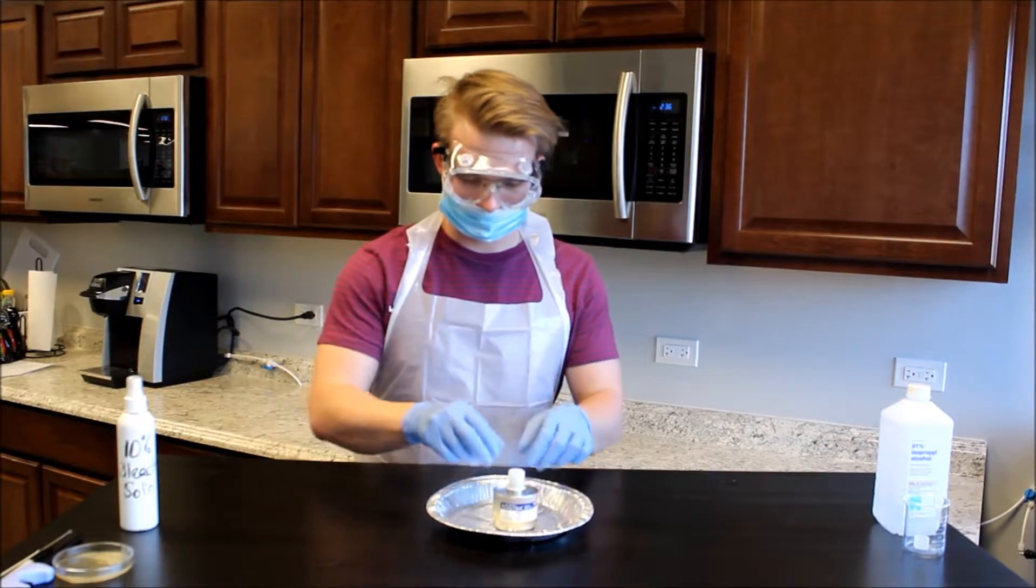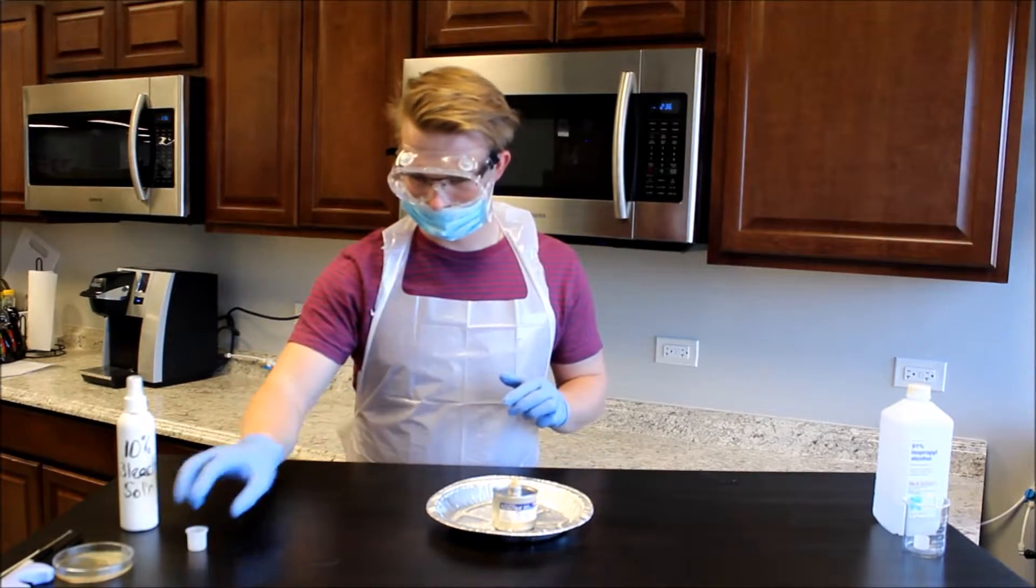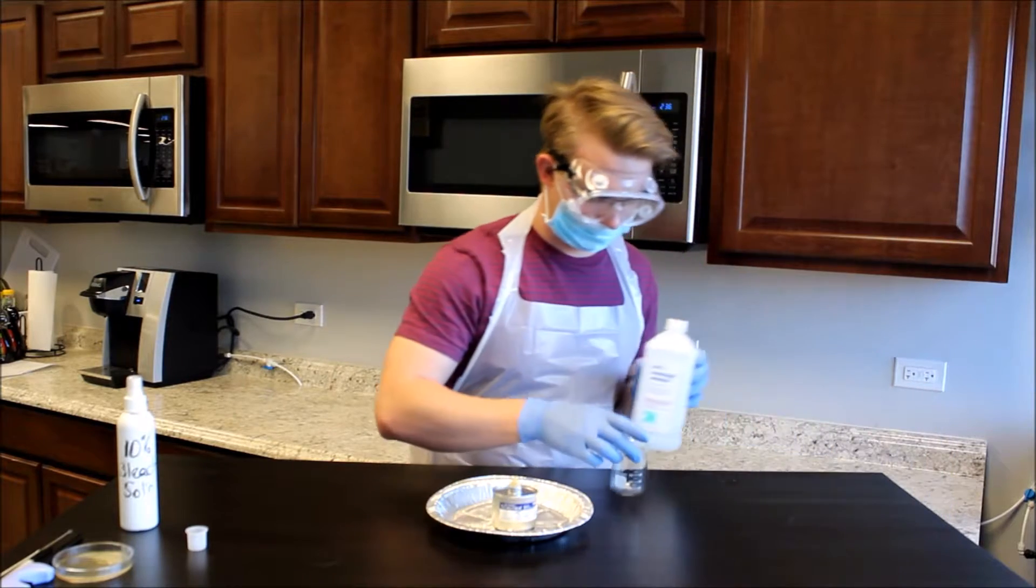Place the aluminum pie pan on the cleaned work surface. Place the burner fuel canister in the pie pan.